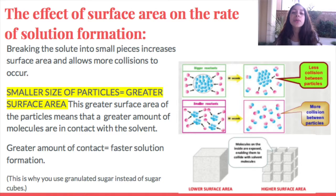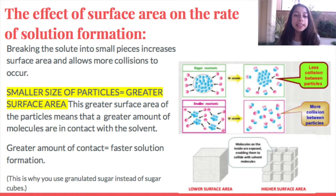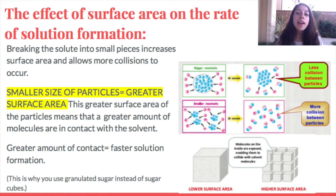Here's how surface area affects the rate of solution formation. Breaking the solute into small pieces increases the surface area and allows more collisions to occur. As we can see in this diagram, bigger reactants have fewer collisions between particles, but smaller reactants have more collisions, which directly correlates to a faster rate of solution formation. A real-world example is why we use granulated sugar instead of sugar cubes when dissolving sugar into tea.